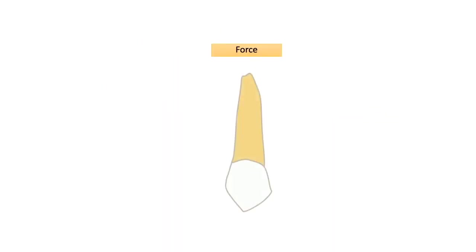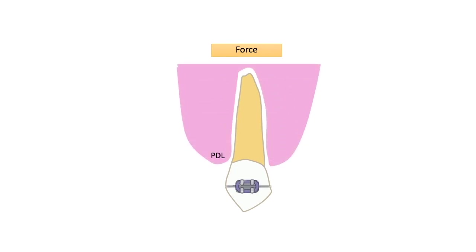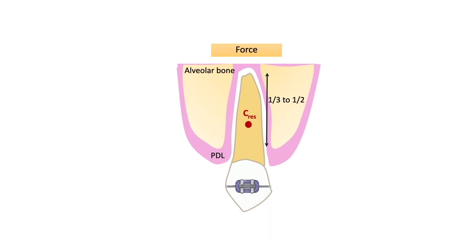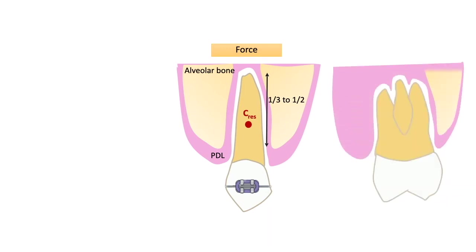The location of the center of resistance depends on the size and shape of the tooth as well as the quantity and level of the supporting structures. In a healthy single-rooted tooth with an intact periodontal ligament, the center of resistance is presumed to be somewhere between one-third and half the distance from the alveolar crest to the root apex. For a multi-rooted tooth, the center of resistance is located between the roots, about one to two millimeters apical to the furcation.